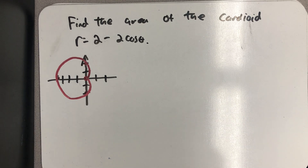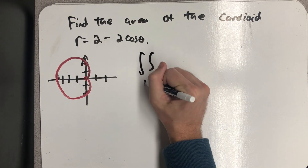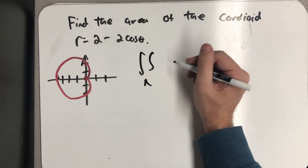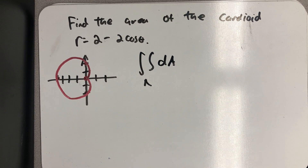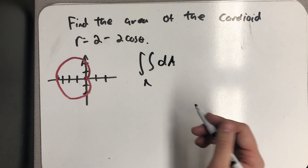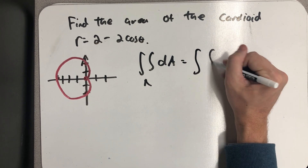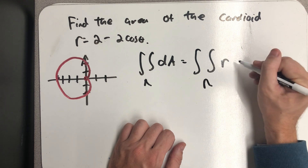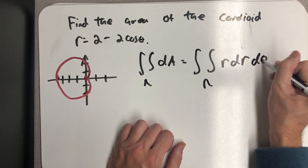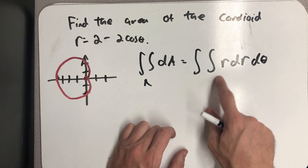We're asked to find the area of the cardioid R equals 2 minus 2 cosine theta. This should be a double integral in polar coordinates of just dA. From our previous conversation, we know this should be an integral over that region R, where dA is really R dr dθ. Now we just need to find bounds of integration.